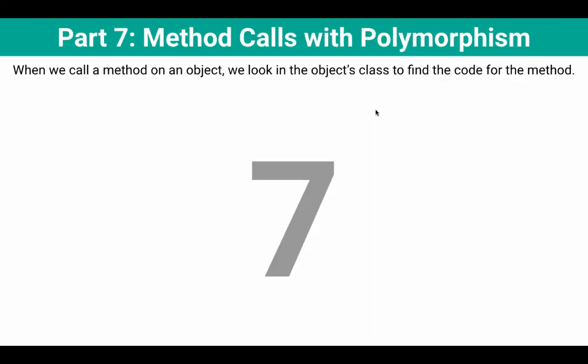So even though we have polymorphism here, where we have a Cat referencing something of a child type, when we call a method on an object, we look in the object's class to find the code for the method.